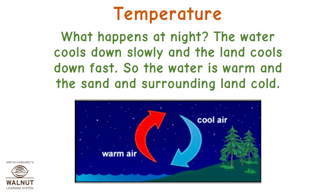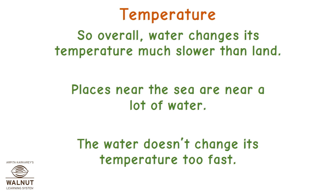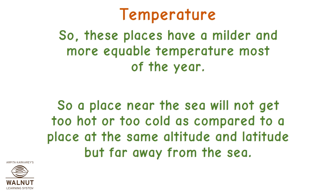What happens at night? The water cools down slowly and the land cools down fast. So, the water is warm and the sand and surrounding land are cold. Overall, water changes its temperature much slower than land. Places near the sea are near a lot of water, so the water doesn't change its temperature too fast. These places have a milder and more equable temperature most of the year — a place near the sea will not get too hot or too cold compared to a place at the same altitude and latitude but far away from the sea.